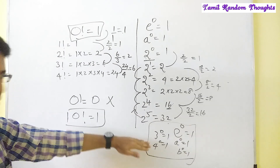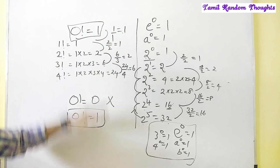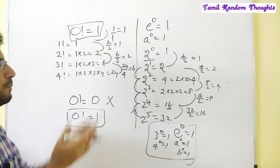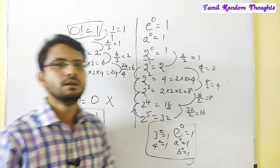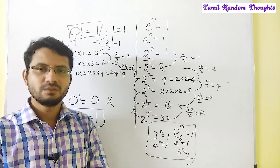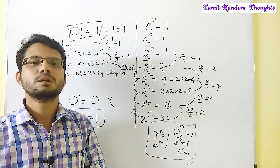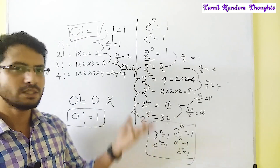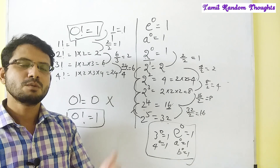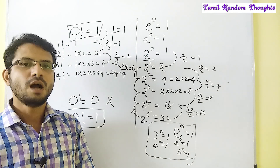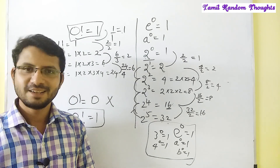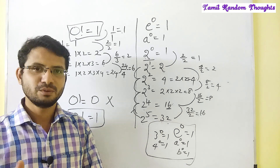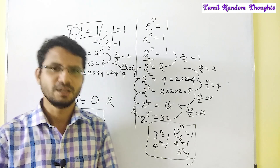This proof is very important. This proof shows 0 factorial equals 1. This is what school mathematics tells us — 0 factorial is equal to 1. We will learn a little more proof. In the next video, I will talk about scientific or other questions. Please comment on this video. Thank you.